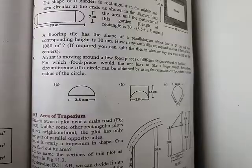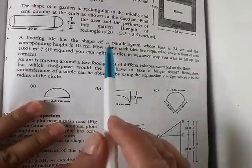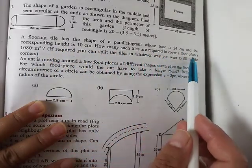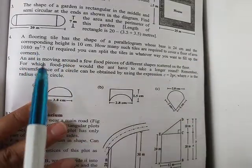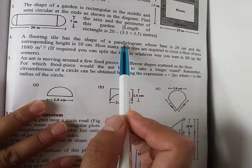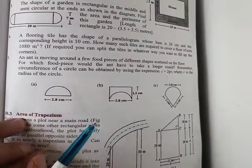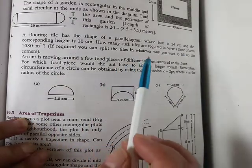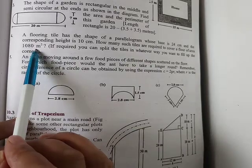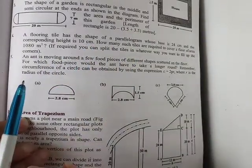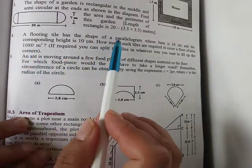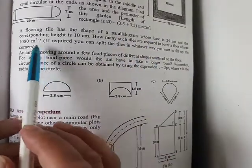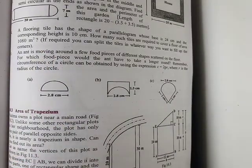Next, question number 4. A flooring tile has the shape of a parallelogram whose base is 24 centimeters and the corresponding height is 10 centimeters. How many such tiles are required to cover a floor of area 1080 square meters? The tile has a parallelogram shape with base 24 and height 10 centimeters. The floor area given is 1080 square meters. We need to convert between centimeters and meters.